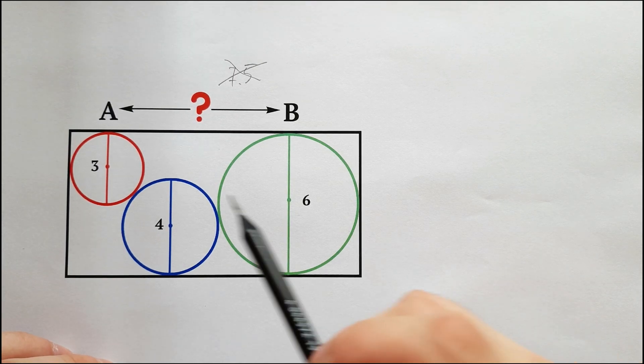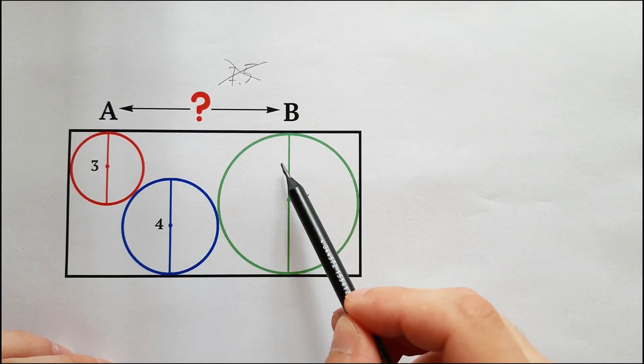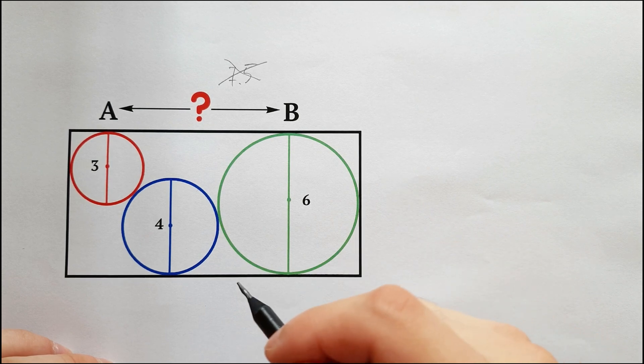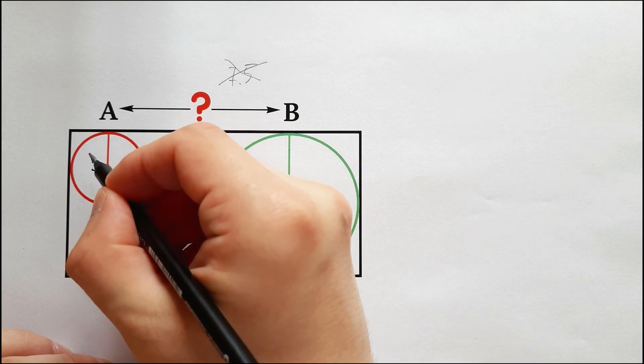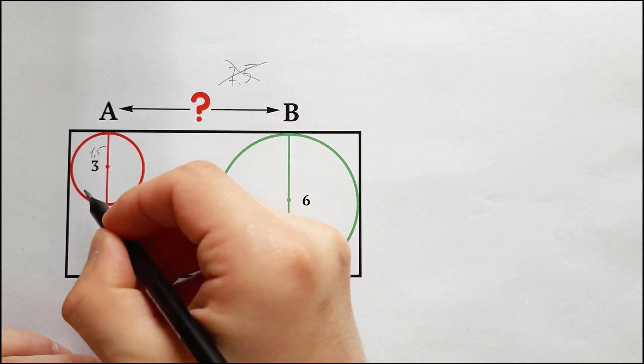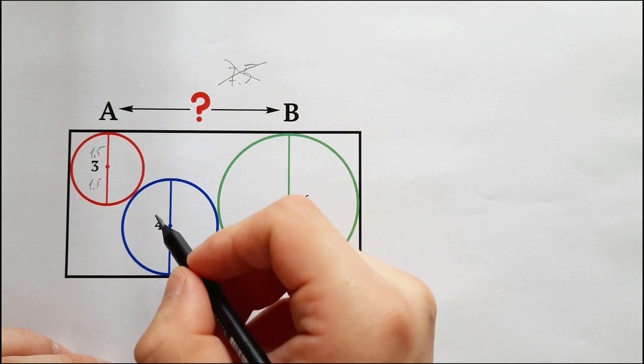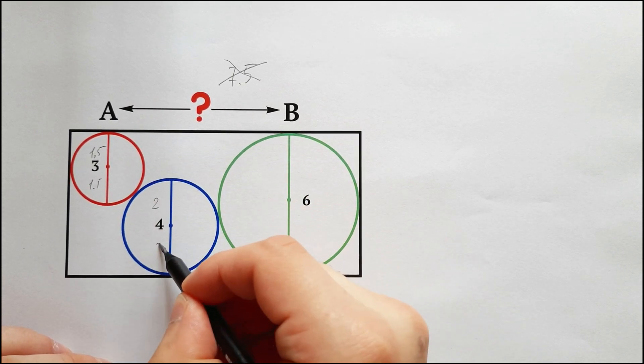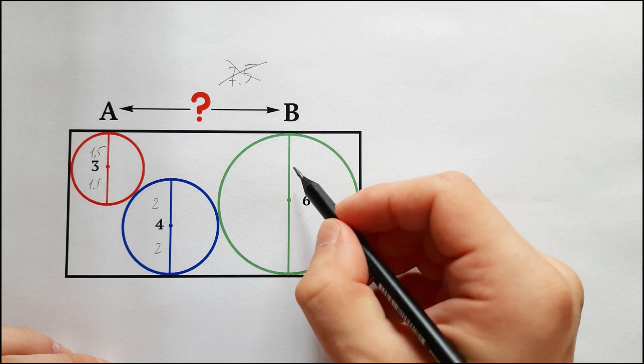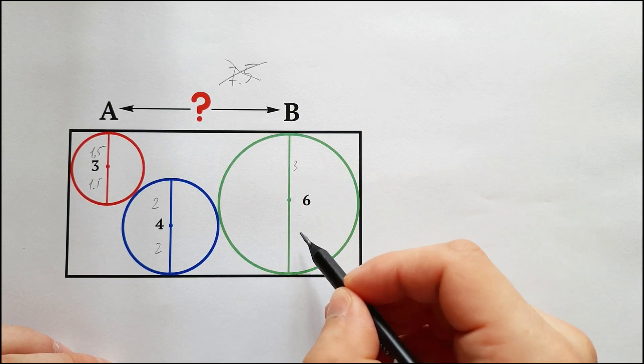To begin with, let's write the radii of the circles instead of the diameters. The red circle will have 1.5, the radius of the blue will be 2, and the radius of the green circle will be 3.